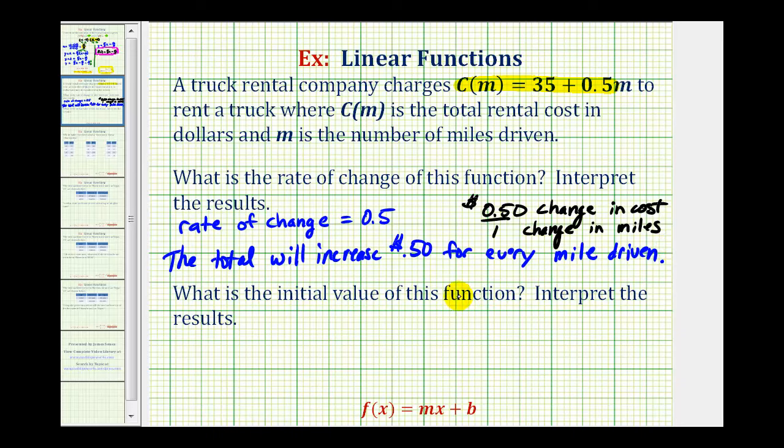Next, we want to determine the initial value, which will be the function value when the input, or in this case m, is equal to 0. So C(0) would just be 35 plus 0, which is 35.